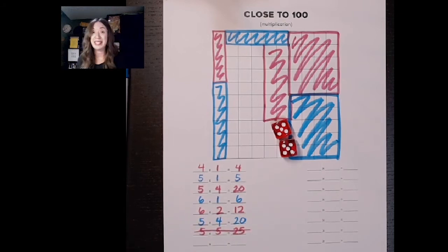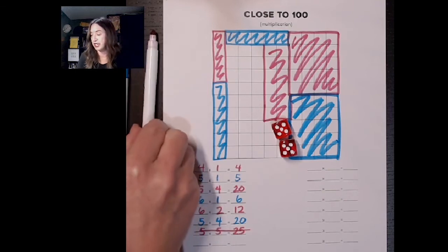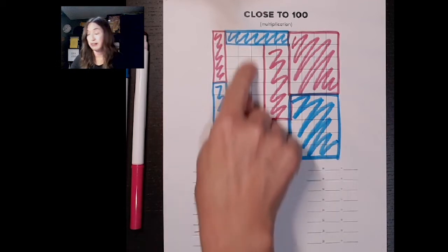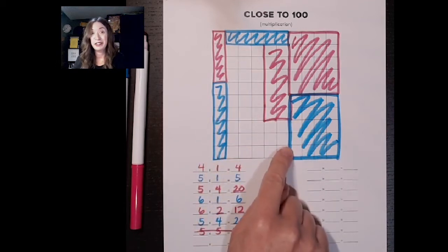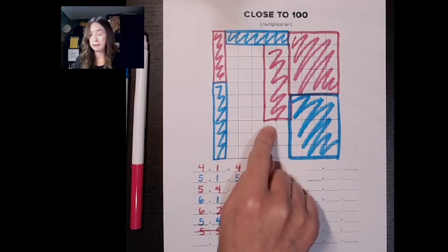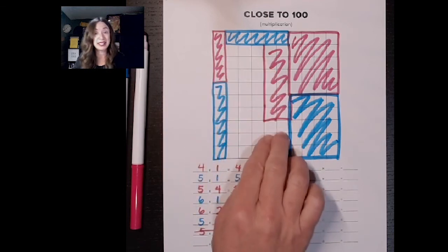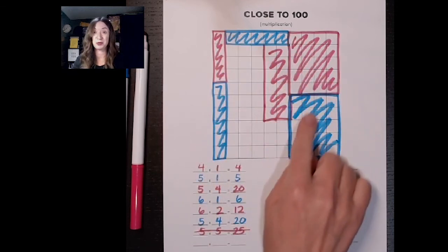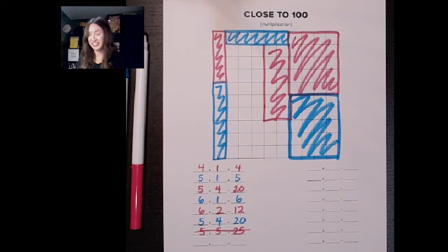Now, the game isn't over because blue still has a chance. If blue rolls something that can fit in here, then we're super lucky because the game will keep going. But if blue rolls something that can't fit in here, then the game is over and this is only as close as we got to 100. Let's see.